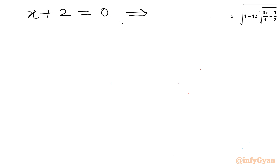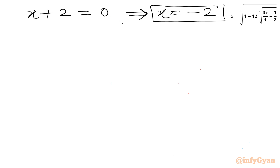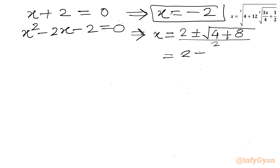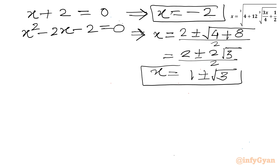From x plus 2 equals 0, we get x equals negative 2. From the quadratic x squared minus 2x minus 2 equals 0, applying the quadratic formula: x equals (2 plus or minus the square root of 4 plus 8) over 2, which gives x equals (2 plus or minus 2 root 3) over 2, simplified to x equals 1 plus or minus root 3. So we have three solutions: x equals negative 2, and x equals 1 plus or minus root 3.